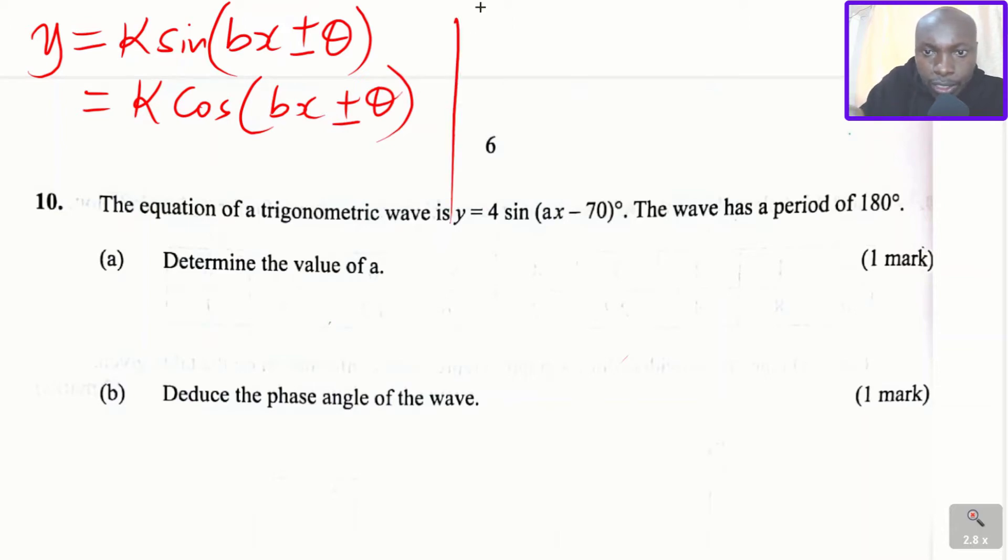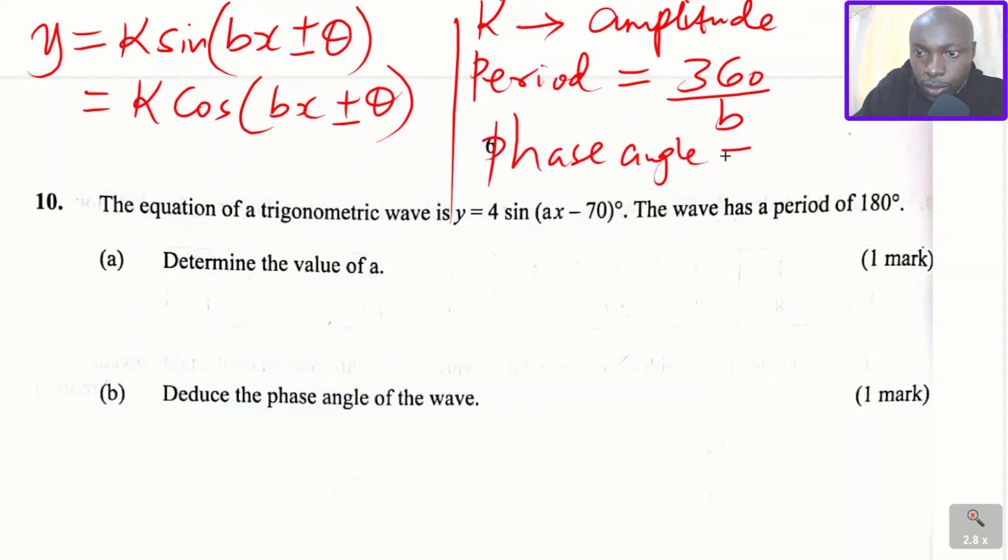then you're supposed to know that k is the amplitude of that wave. So if it is in those two formats, then k is the amplitude. The period is given by 360 divided by b, and the phase angle equals theta. These two equations will help you determine the period, amplitude, and phase angle.